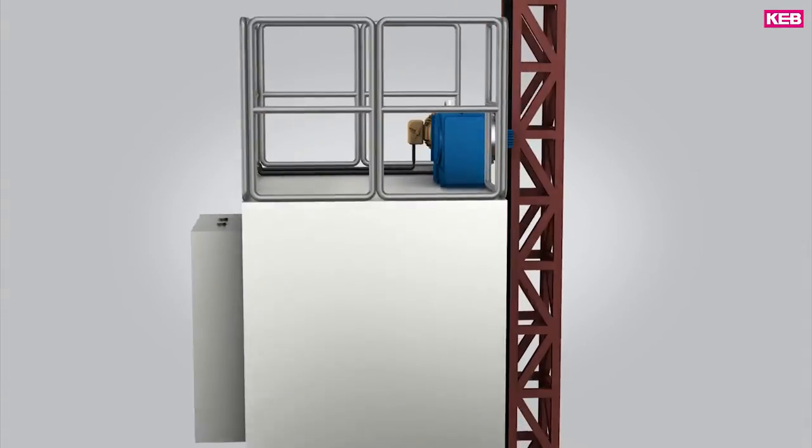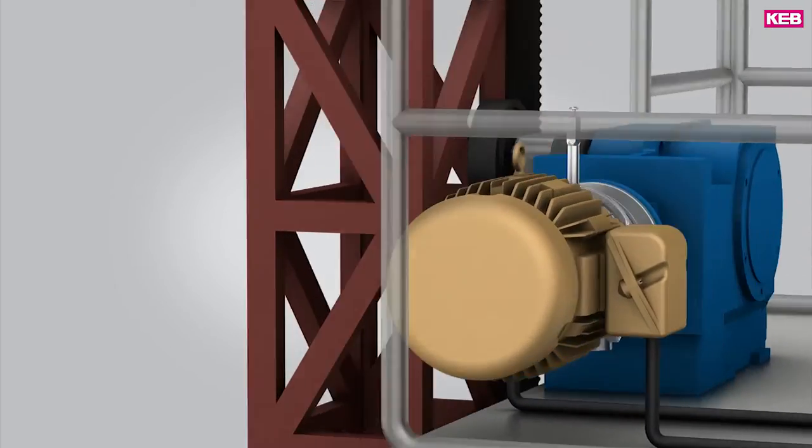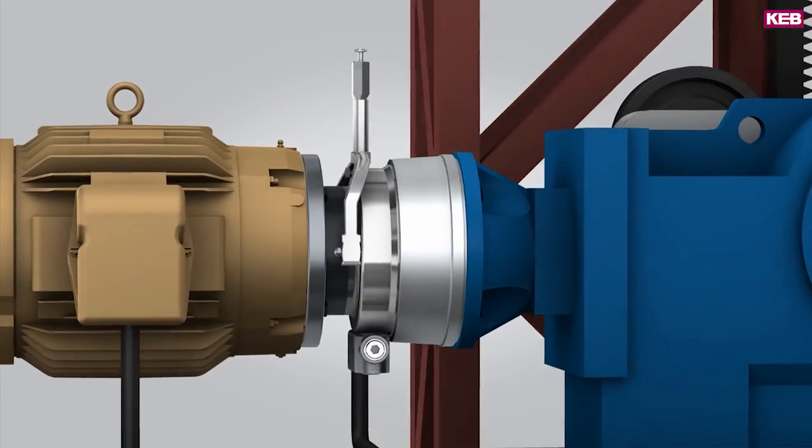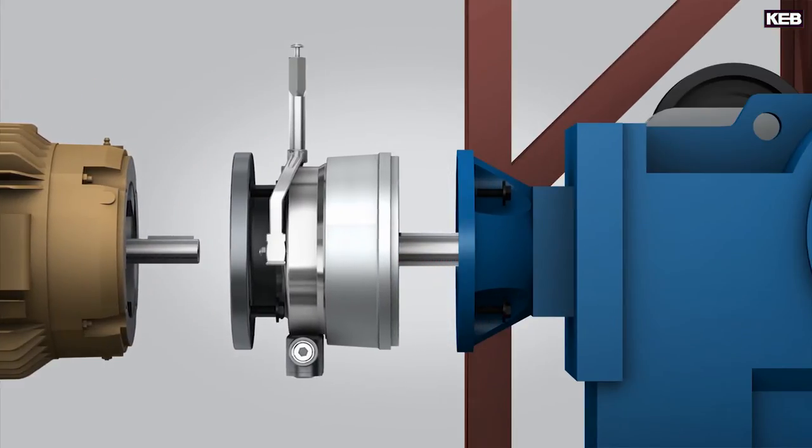KEB's Type 17 brake is a spring-applied, power-off brake contained in a double C-face housing. One advantage of the KEB double C-face brake is its easy assembly to a standard NEMA C-face motor.